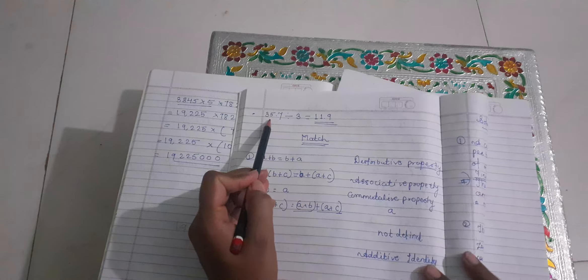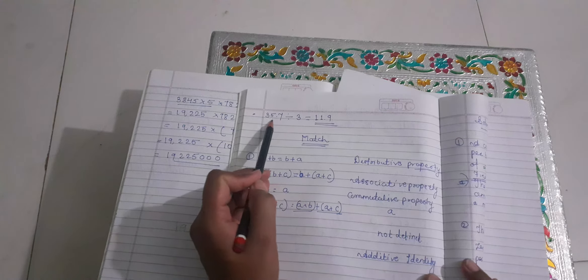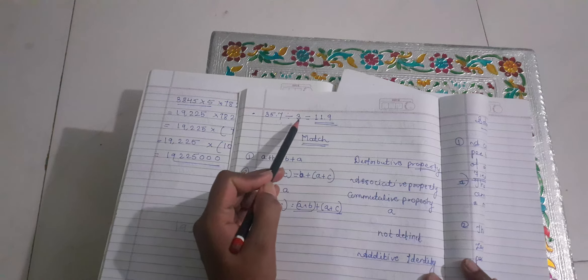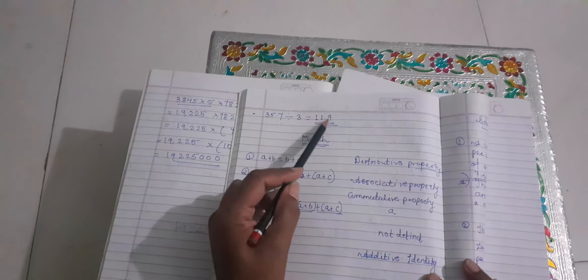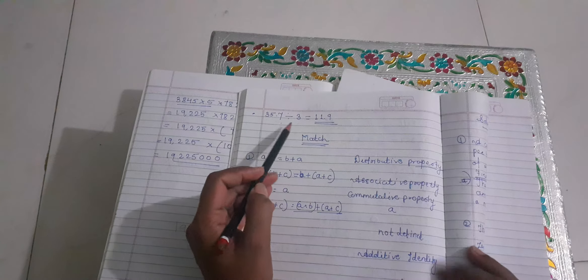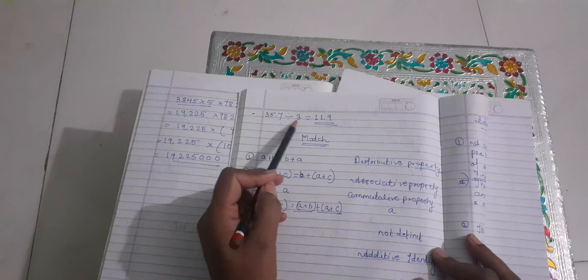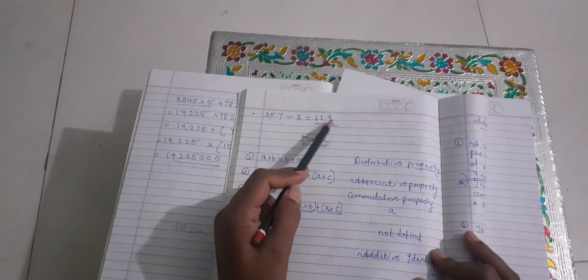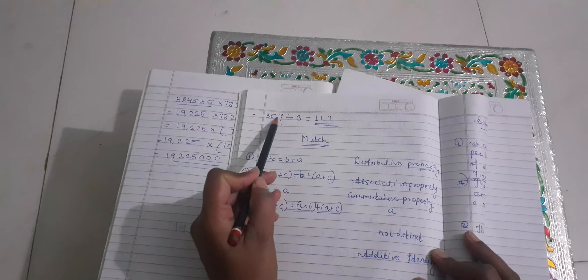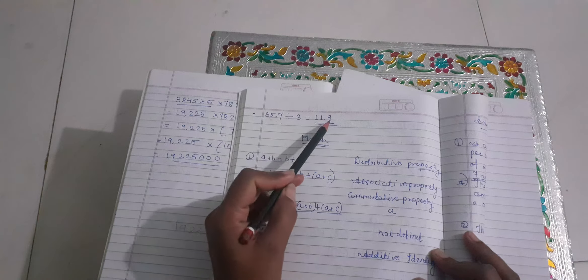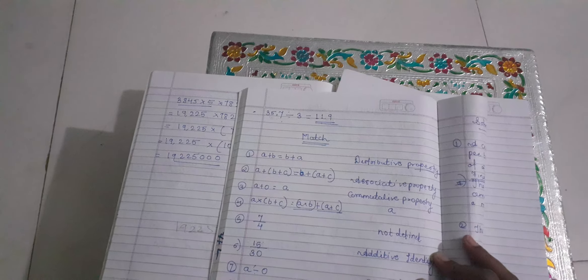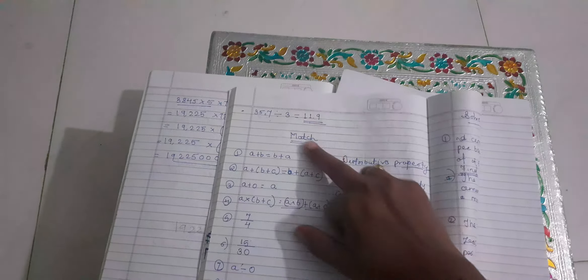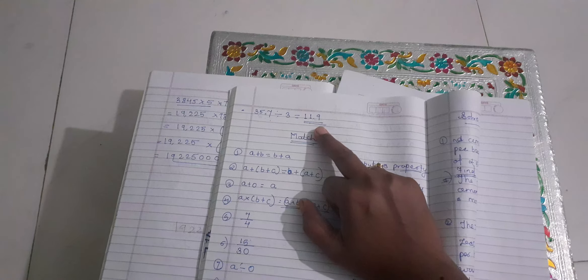Then, 13.57 divided by 3 — you just divide like whole numbers. 3 ones are 3, 3 ones are 3 with 2 remaining, and 3 nines are 27. After one decimal digit, the answer will be 11.19. Got it?